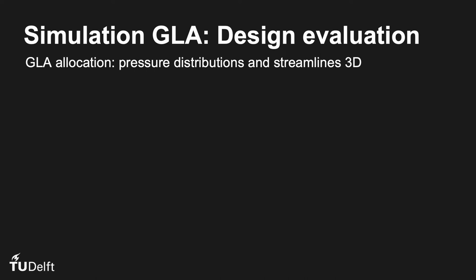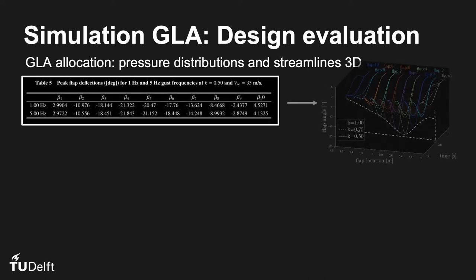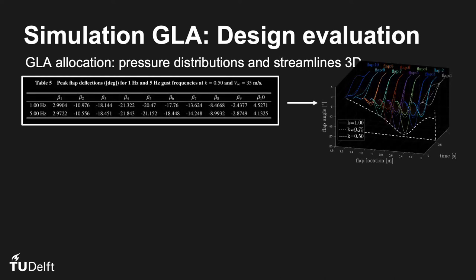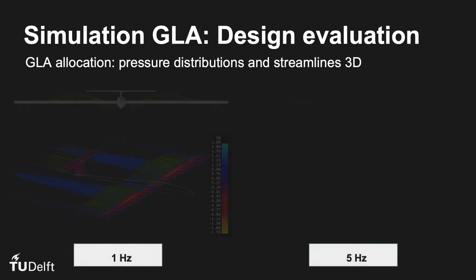Here, additional aerodynamic analysis is performed to study the effect of control allocation. The control allocation is sampled at the onset peak of the allocated flap angle shown here in time domain. In this analysis, the 3D color maps projected on the aircraft wings are the pressure distributions for 1 and 5 Hz.